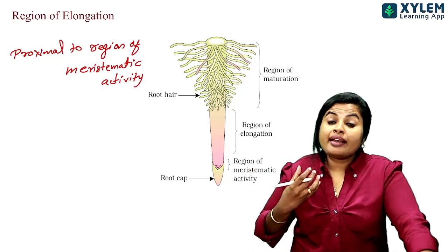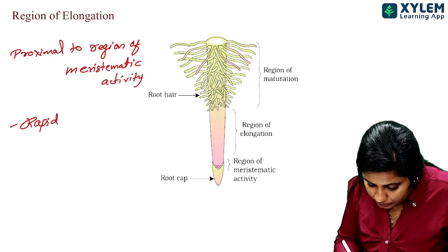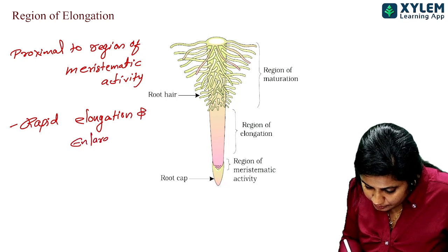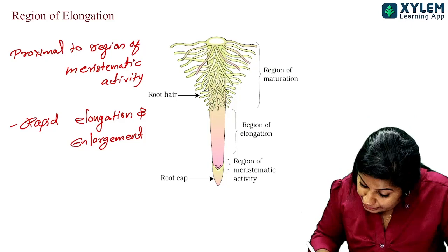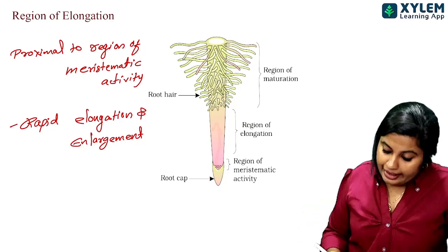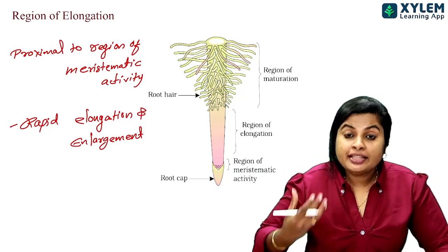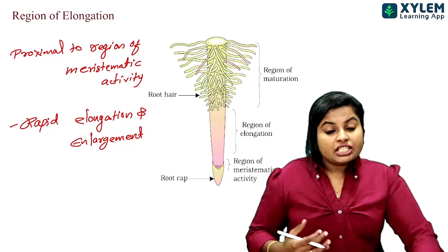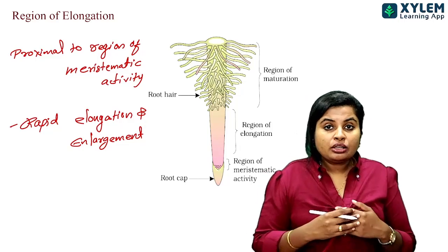The region of elongation undergoes rapid elongation and enlargement. It is proximal to the region of meristematic activity and is a very important region.